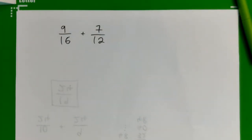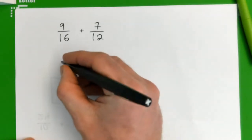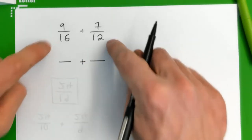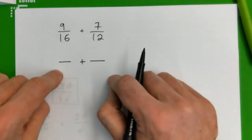When you're adding or subtracting fractions, what you need to do is turn both fractions into the same type of fraction. In other words, they both need to have the same bottom or the same denominator.